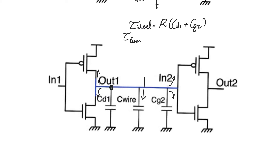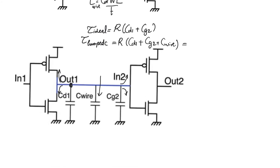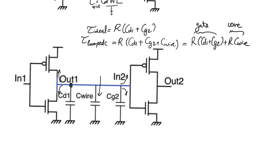If we want to find the time constant using the lumped capacitor model and taking wire capacitance into consideration, we simply add C_wire in parallel with the other two capacitances, giving CD1 plus CG2 plus C_wire. The time constant then has two components: R·(CD1 + CG2), which is the gate time constant or gate delay, and R·C_wire, which is the interconnect or wire time constant. The wire increases capacitive loading on the gate, requiring more electrical effort and raising the gate delay — this is external loading, not self-loading.